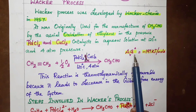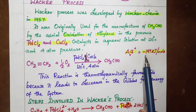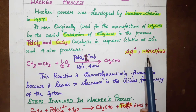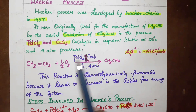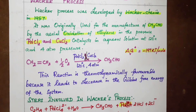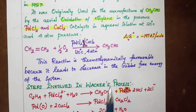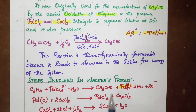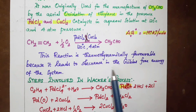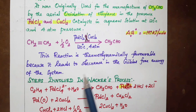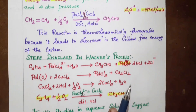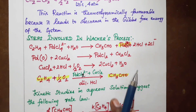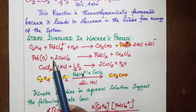The reaction has a Gibbs free energy value of minus 197 kilojoules per mole. The reaction is thermodynamically favourable because it leads to a decrease in the Gibbs free energy of the system. The next steps are involved in the Wacker Process.